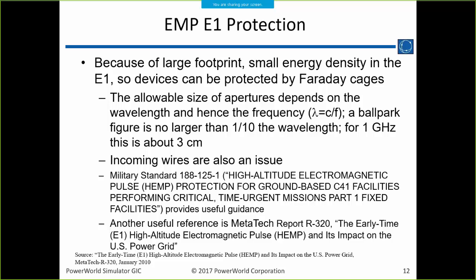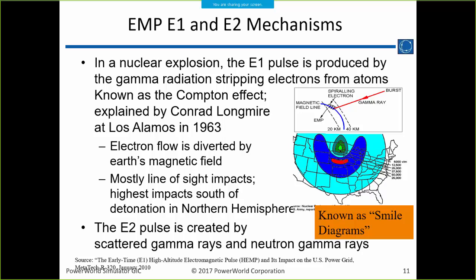There's a lot of work on E1 protection for power system equipment. The key is the relationship between wavelength, speed of light, and frequency. High-frequency pulses go through apertures that are relatively small — at one gigahertz, it's about three centimeters. As long as you keep apertures below that frequency-dependent limit, you can shield against impacts. But substations have wire runs coming in larger than that which aren't shielded. On the smile diagram, the highest impacts are south of a detonation in the northern hemisphere — that's from the Compton effect.